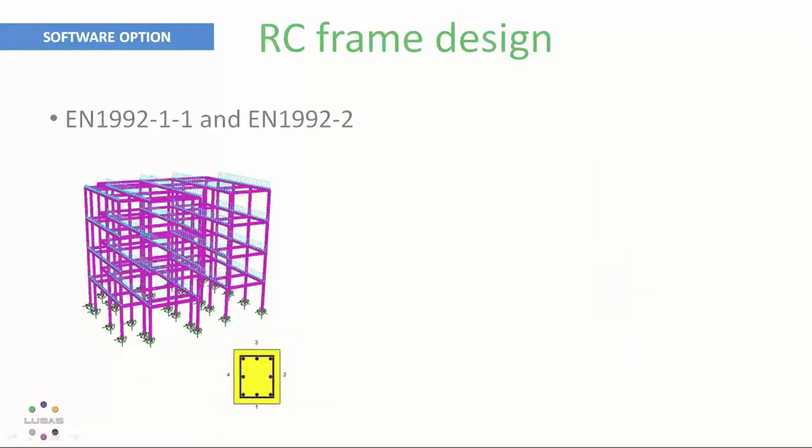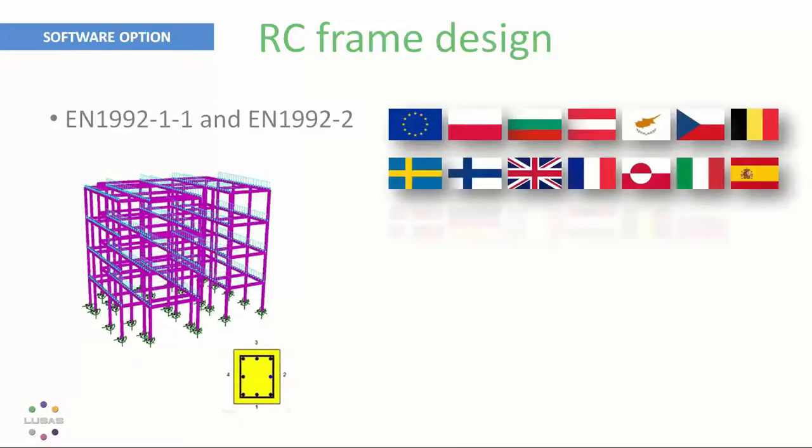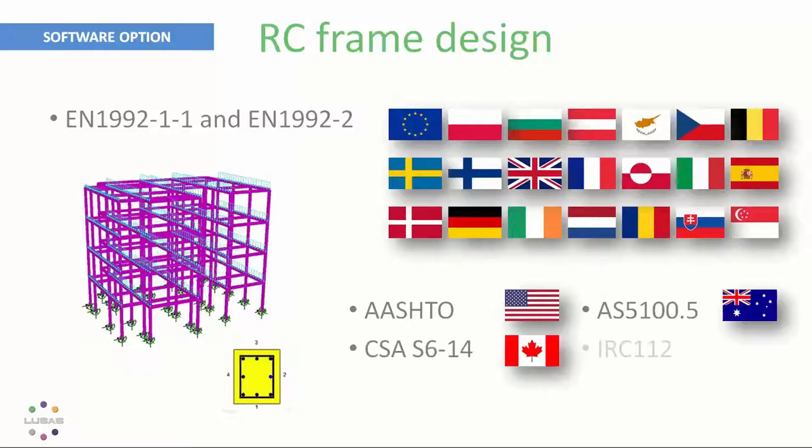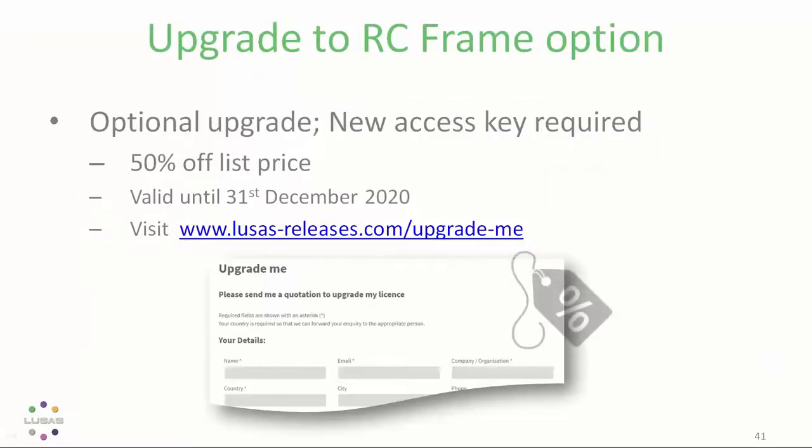And even view moments and axial force interaction plots and diagrams in 2D and in 3D. The reporting is transparent and comprehensive. And this RC frame designer produces detailed reports and checks to many codes, including Euro codes and the USA AASHTO codes. It even covers Euro codes for bridges and buildings with national annexes for 18 countries explicitly included, plus Singapore and from version 19. It's extended to cover AASHTO and Australia, Canada and India.